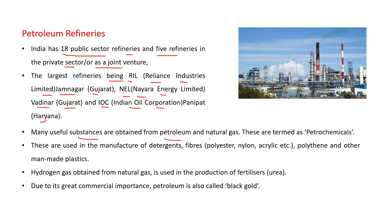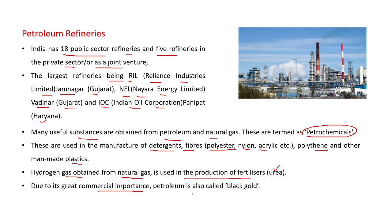Many useful substances are obtained from petroleum and natural gas, termed as petrochemicals. These petrochemicals are used in the manufacture of detergents, fibers like polyester, nylon, and acrylic, polythene, and other man-made plastics. Hydrogen gas obtained from natural gas is used in the production of fertilizers such as urea. Due to its great commercial importance, petroleum is also called black gold.